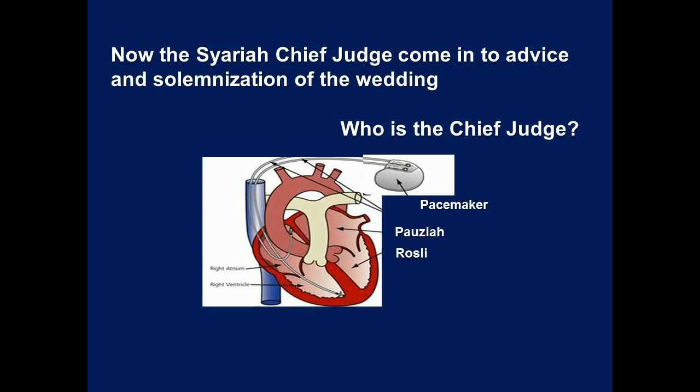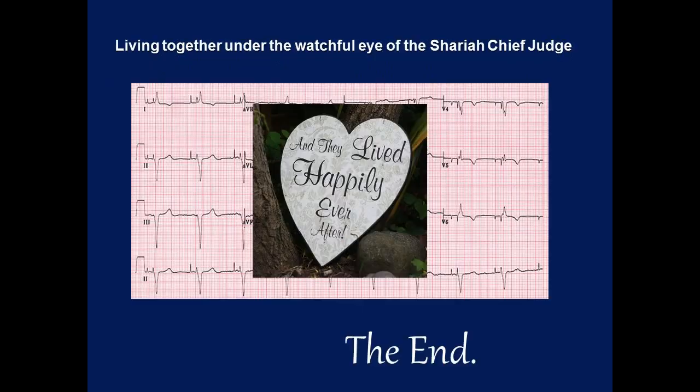Which synchronized the relationship. Now the P and QRS are in synchrony — that is, P follows the QRS. Now they are living together under the watchful eyes of the Chief Judge, and they are living happily ever after. The end.